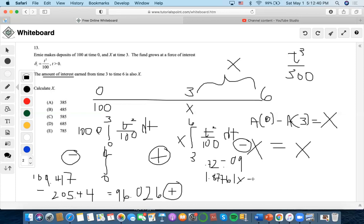Times x minus x, so minus 1. We end up getting 0.87761x.